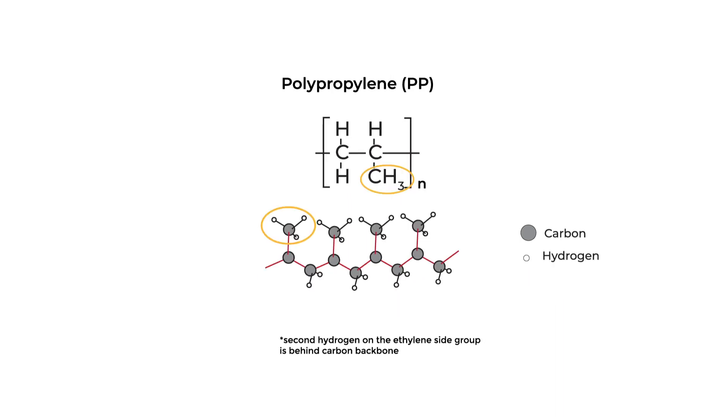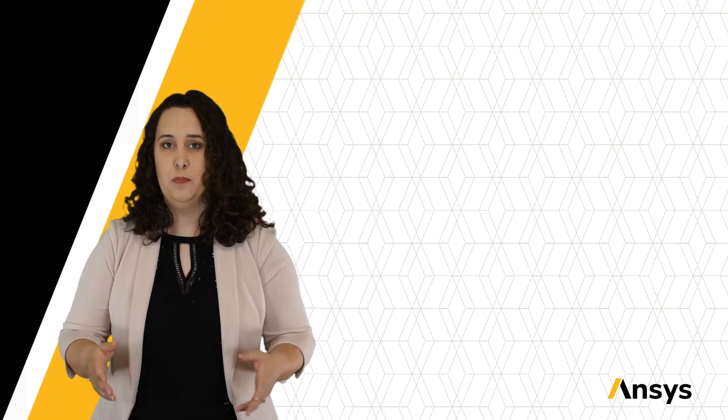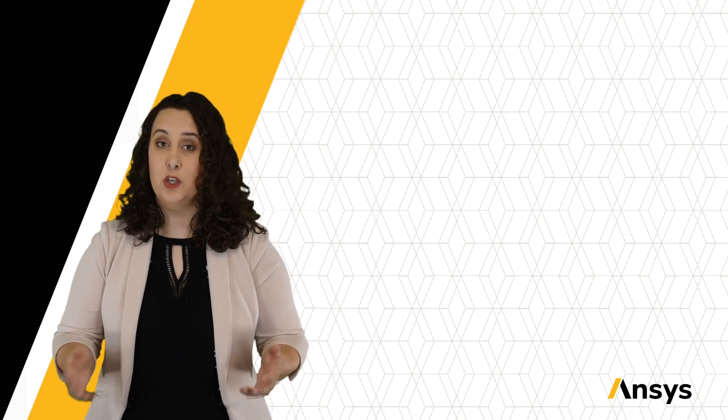Side groups don't have to be just atoms. For example, polypropylene has an ethylene side group, along with some hydrogens. Now, these side groups can have multiple configurations, depending on how they arrange themselves within the chain, which is called stereoisomerism,